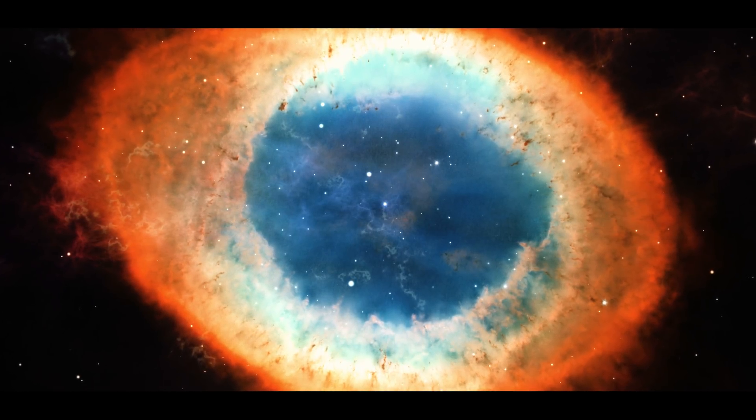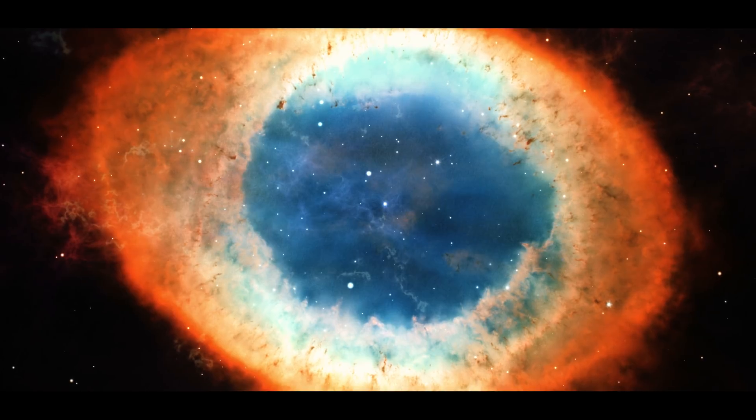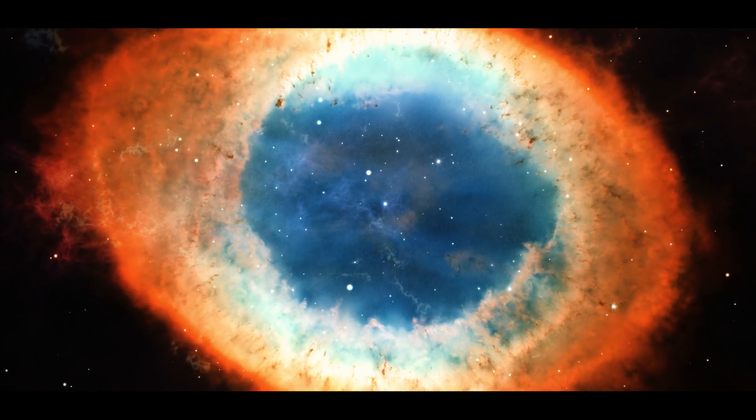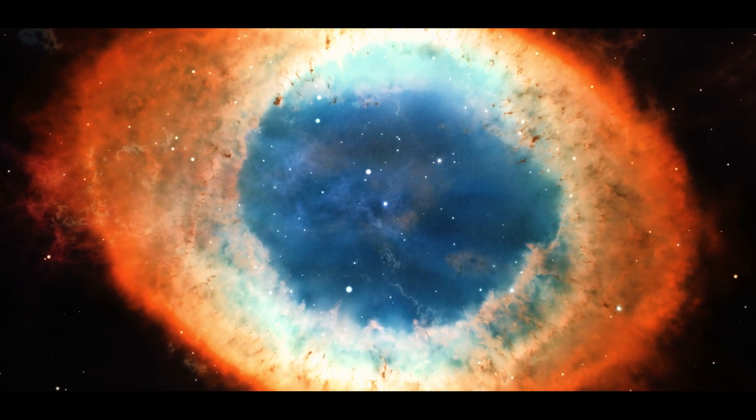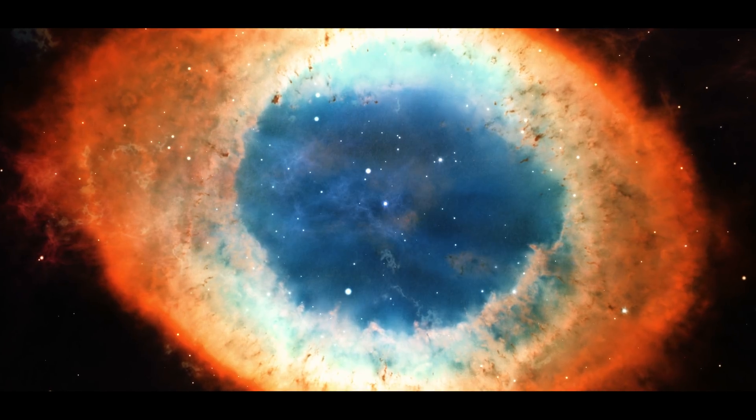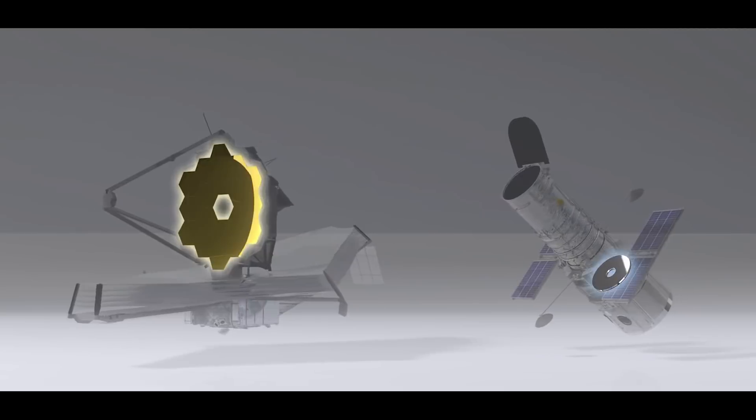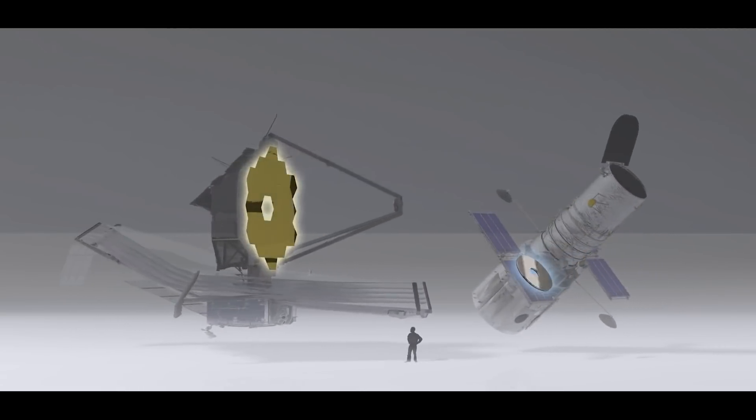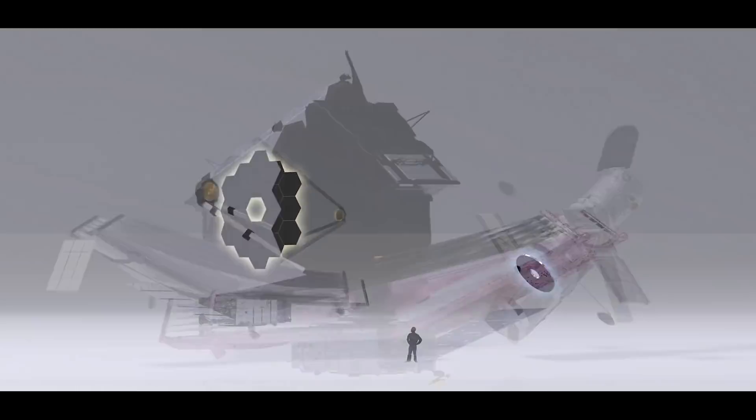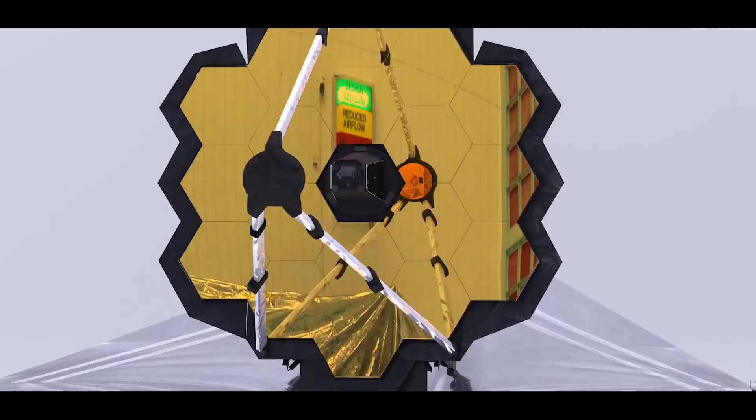Webb will have a 6.5 meter mirror and a sunshield the size of a tennis court, making it the largest infrared telescope ever. It's the successor of the very successful Hubble Space Telescope, but with a primary mirror over six times bigger in area than Hubble's and 100 times more powerful.